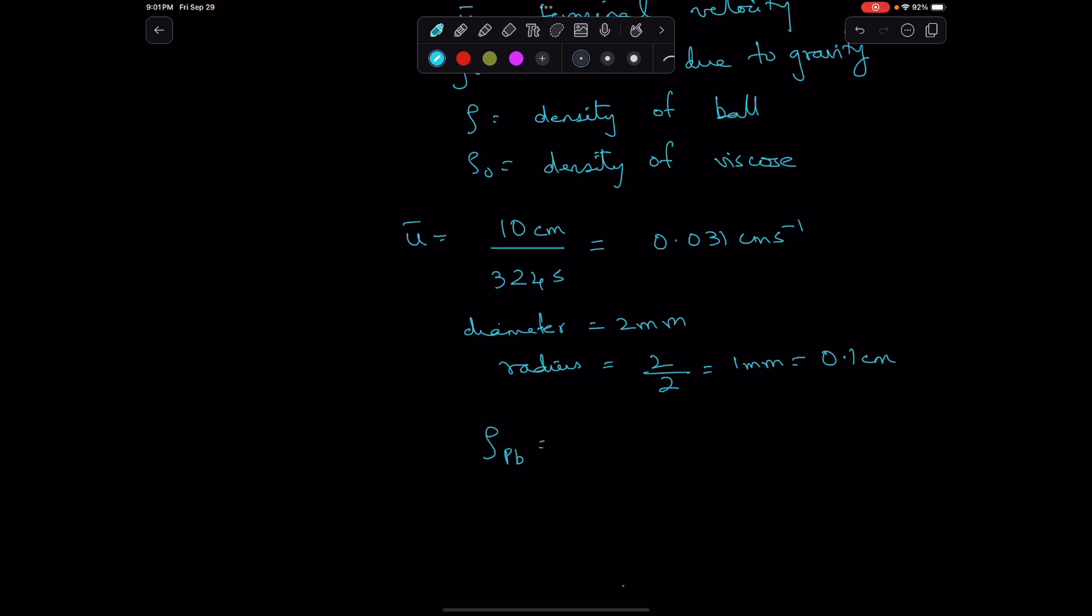Density of lead can be found from the periodic table to be 11.33 grams per centimeter cubed. Density of viscose is given as 1.2 grams per centimeter cubed.